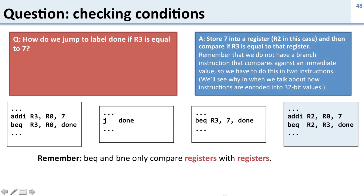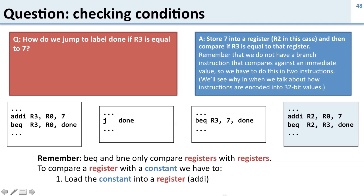Remember that branch equal and branch not equal only compare registers with registers. If we want to compare a register with a constant in a branch, we have to first load the constant into a register using add immediate, then compare the registers using branch not equal or branch equal.